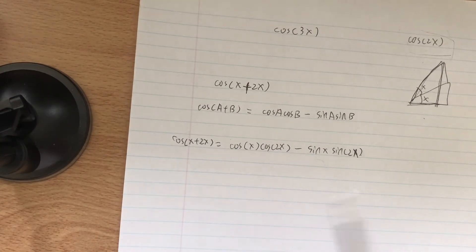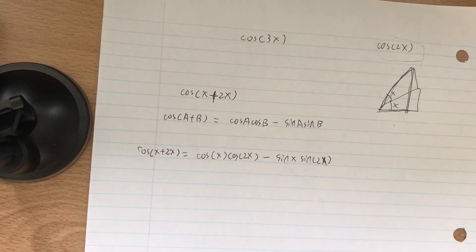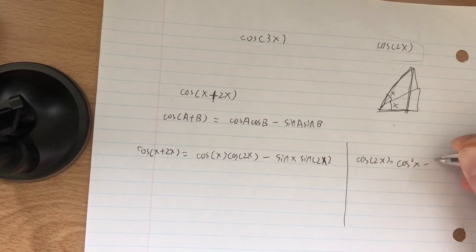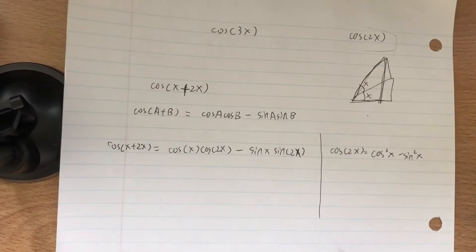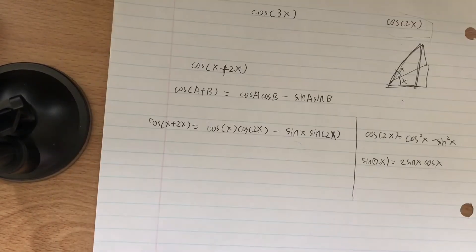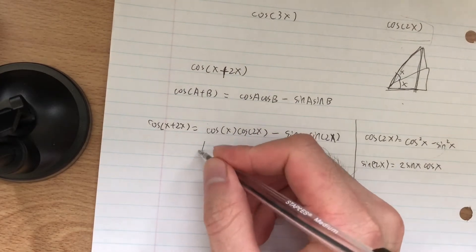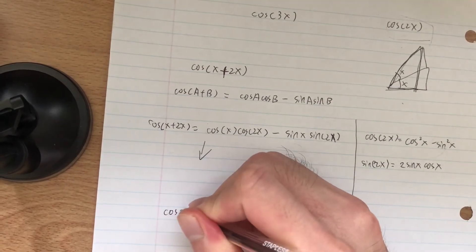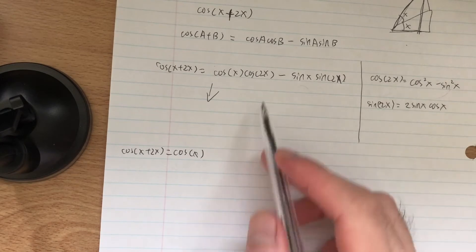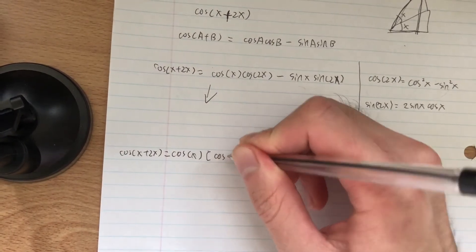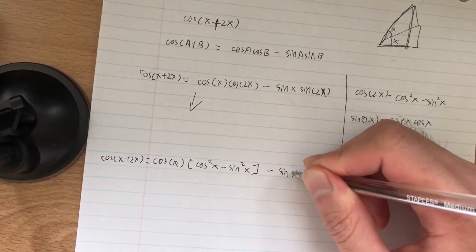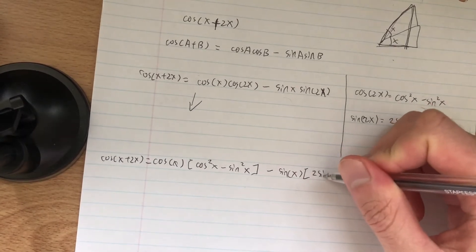Cosine x and sine x stay as they are. Now we have cosine 2x and sine 2x to deal with. Cosine 2x equals cosine squared x minus sine squared x, and sine 2x equals 2 sine x cosine x. We can plug these into our expression: cosine x times (cosine squared x minus sine squared x) minus sine x times 2 sine x cosine x.